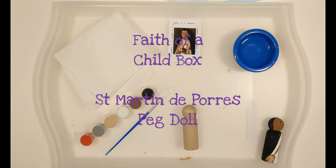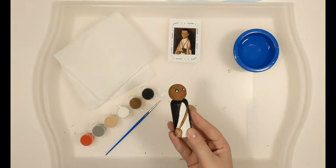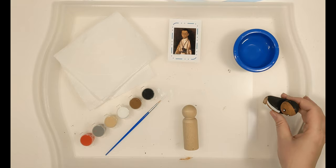Howdy! Welcome to Faith of a Child box videos, helping your family become saints together. Today we are going to be painting our St. Martin de Porres paint doll. So this is my little example here. You see St. Martin and he has a broom because he is known as the Saint of the Broom. So we are going to go ahead and get started.